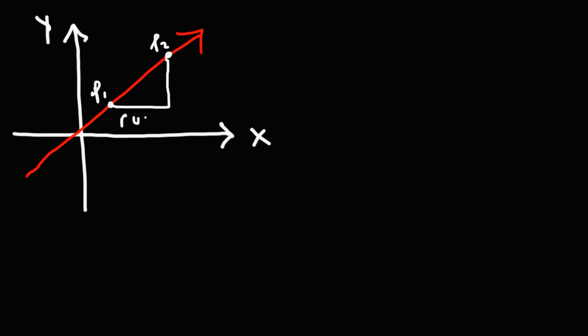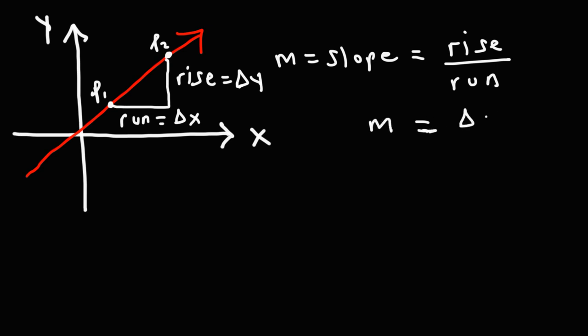This portion here is the run. This part of the triangle is the rise. The slope represented by the symbol M is equal to the rise divided by the run. The rise between those two points is the change in y, the difference in the y values. The run is the change in x. So the slope is equal to the change in y divided by the change in x.